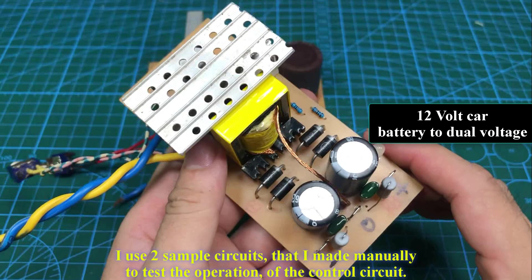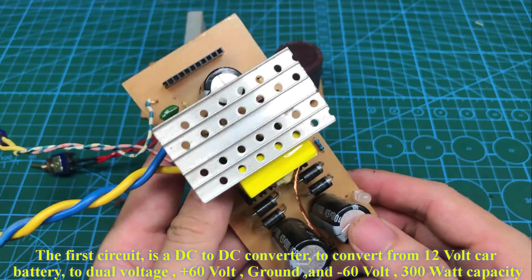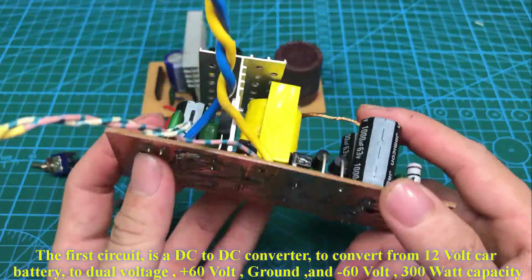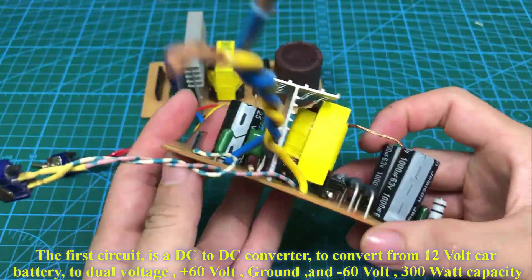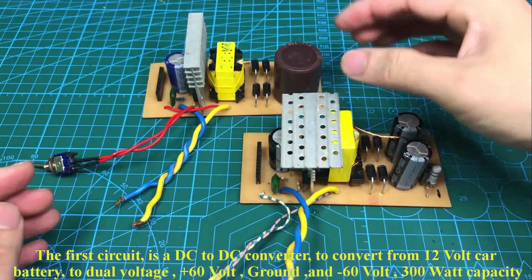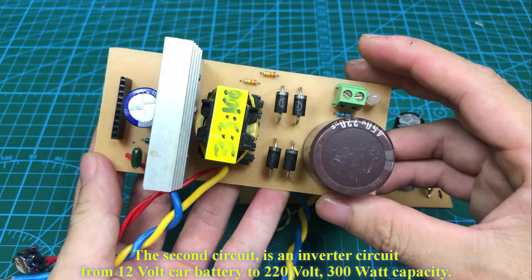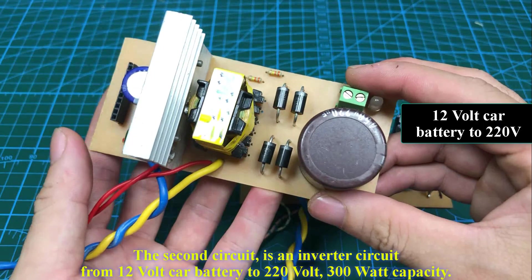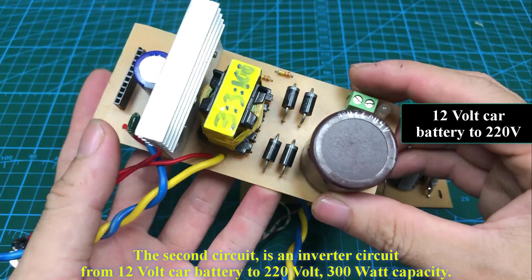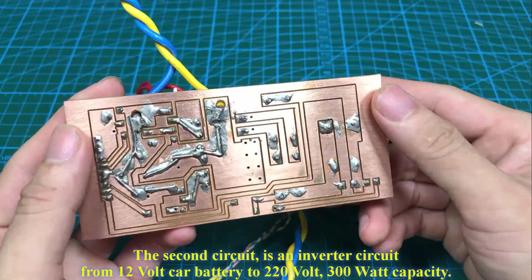The first circuit is a DC to DC converter to convert from 12 volt car battery to dual voltage, plus 60 volts, ground, and minus 60 volts, 300 watt capacity. The second circuit is an inverter circuit from 12 volt car battery to 220 volts, 300 watt capacity.